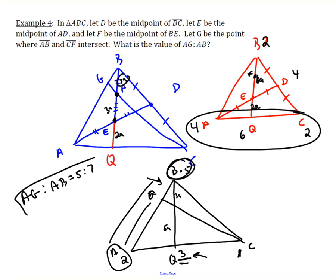And so AG to AB is simply going to be 5 to 7. And it's a nice creative use of mass points.